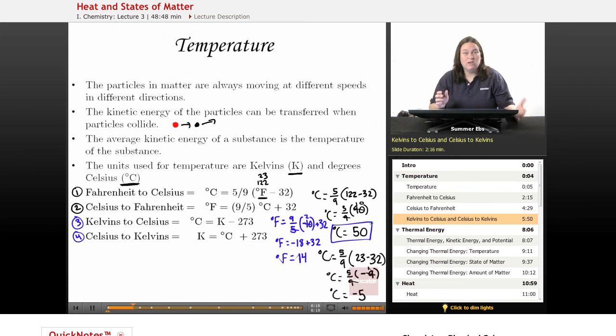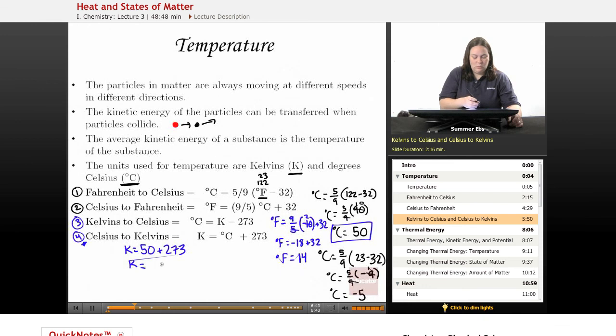So if I have Celsius and I want Kelvins out of it, I'm going to use my fourth formula here. So I want Kelvins, I'm given degrees Celsius, which was 50, and all I have to do is add 273 to that number. So in Kelvins, 50 degrees Celsius equals 323. And we just label it 323 with a big K is what the label for that would be.